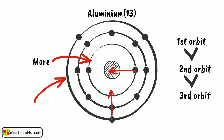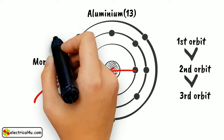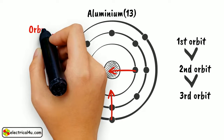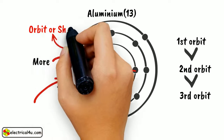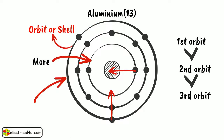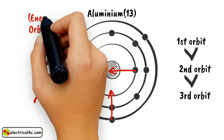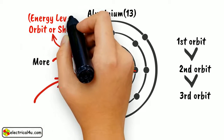Hence, we can say that the electrons in the orbit are associated with a definite amount of energy. Thus, the orbits or shells are also referred to as energy levels.